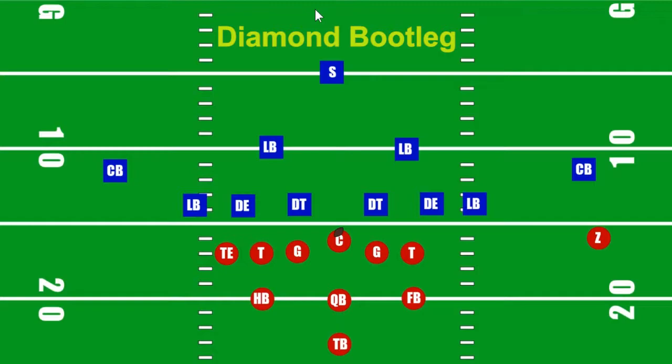This is our first solely passing play that we're putting in. All the other ones have pass options involved, but this one is designed solely for the pass. On this bootleg, you fake one way and you roll the quarterback out the other way. So the quarterback will fake a handoff and roll out. Let's break down the play.